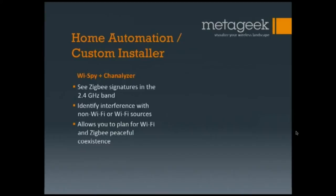Next user type is the home automation or custom installer. This person wants all of the wireless technologies in the custom home to play nice with each other. With Wi-Fi, since it can see both Wi-Fi stuff and non-Wi-Fi stuff and doesn't care what it is — that's the beauty of it, it just delivers raw spectrum data — combined with your USB wireless NIC, you can get additional intelligence about the APs. If you have something that's not Wi-Fi like Zigbee, Wi-Fi will still let you see that. You can identify interference with Zigbee, Wi-Fi, non-Wi-Fi, and how Zigbee and Wi-Fi are interacting together, allowing you to really plan for how they'll play nice together.